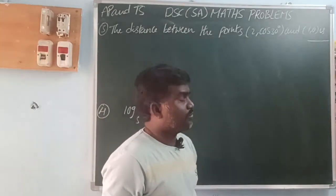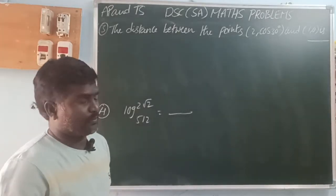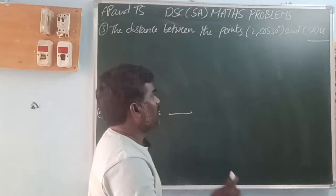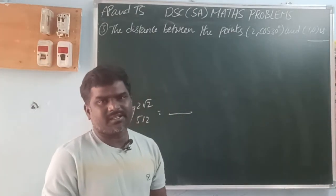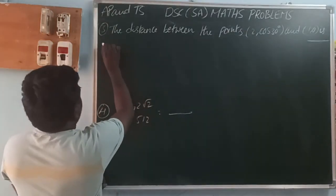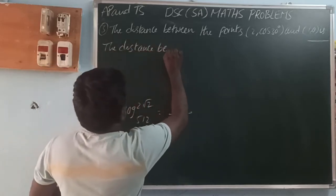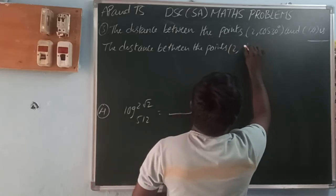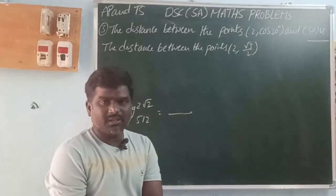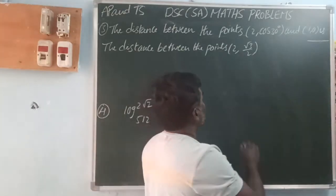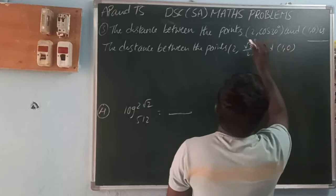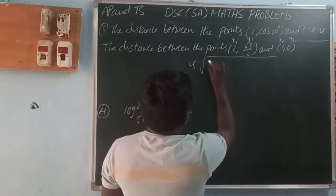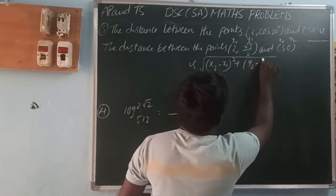Next: find the distance between the points (2, cos 30°) and (1, 0). cos 30° = √3/2. So the two points are (2, √3/2) and (1, 0). Let x₁ = 2, y₁ = √3/2, x₂ = 1, y₂ = 0. Using the two-point distance formula: √[(x₂ − x₁)² + (y₂ − y₁)²].